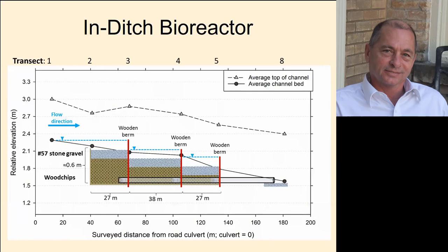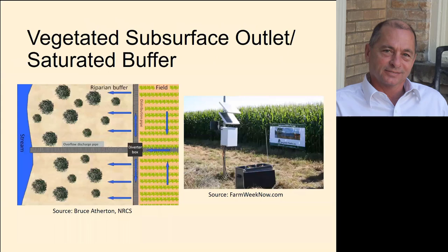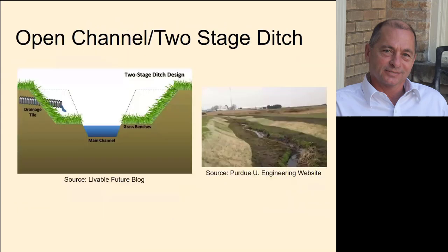We're documenting lower nitrate concentrations with the in-ditch bioreactor as well. Laura talked about saturated buffers — we're evaluating those for our landscapes. Instead of the tile drain going directly to the stream, it goes laterally and releases nutrients and water through the saturated buffer, where nutrient uptake occurs through the riparian buffer. She also mentioned two-stage ditches, which might have a mini floodplain next to the channel that can trap sediment as well as nutrients.